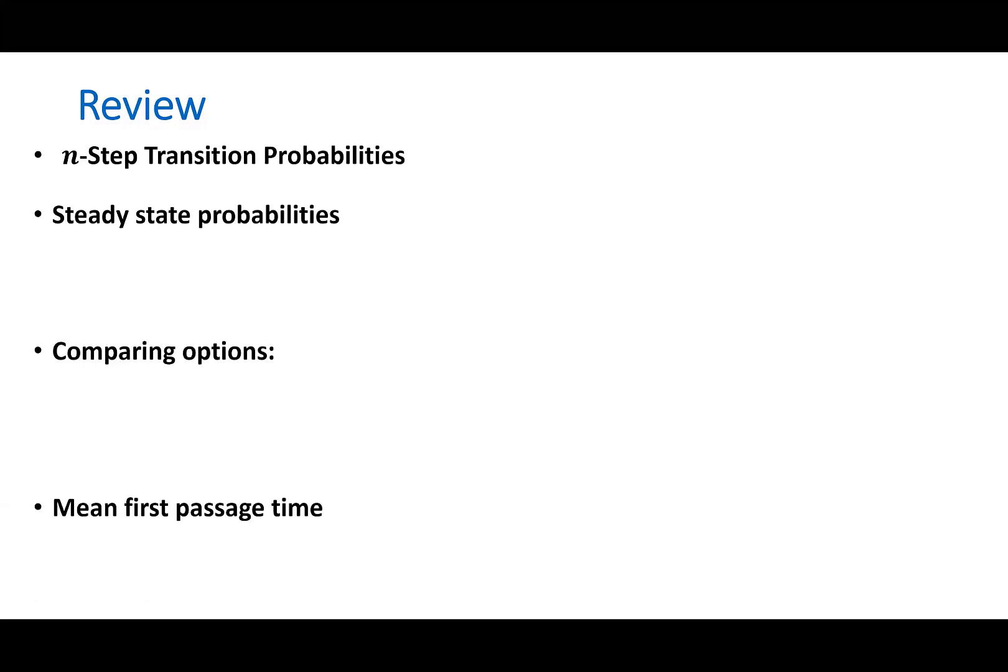Basically, if you want to see what's the probability of going from a state i to j in N steps, you look at row i column j of p to the power of n.